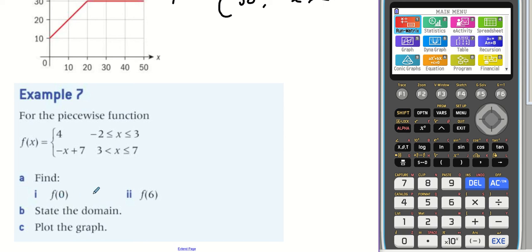So for f of zero, that happens in here. So we use this one for f of zero because our x is between minus two and three. So f of zero would equal four.